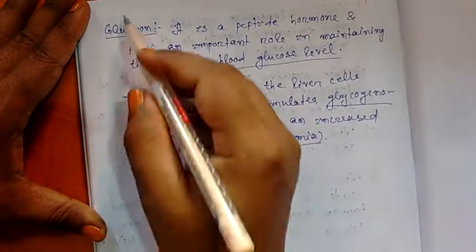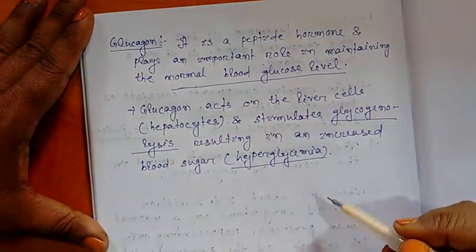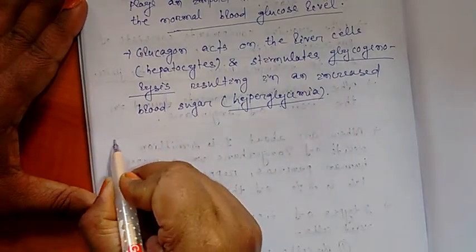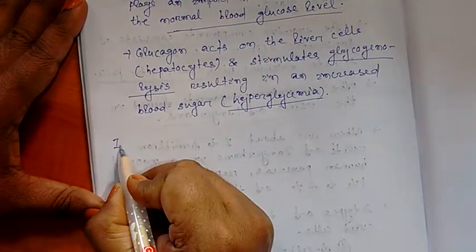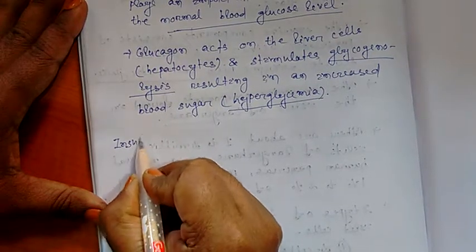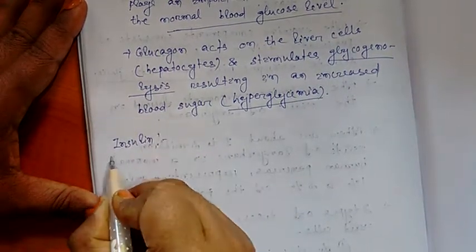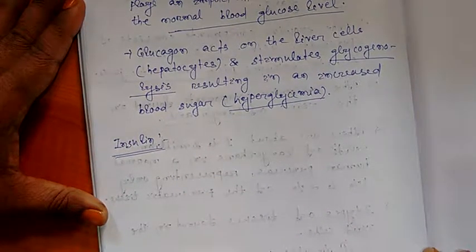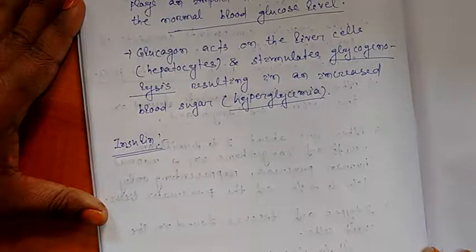Next comes Insulin, which is secreted by beta cells of the pancreas. We commonly know that deficiency of insulin causes diabetes mellitus.